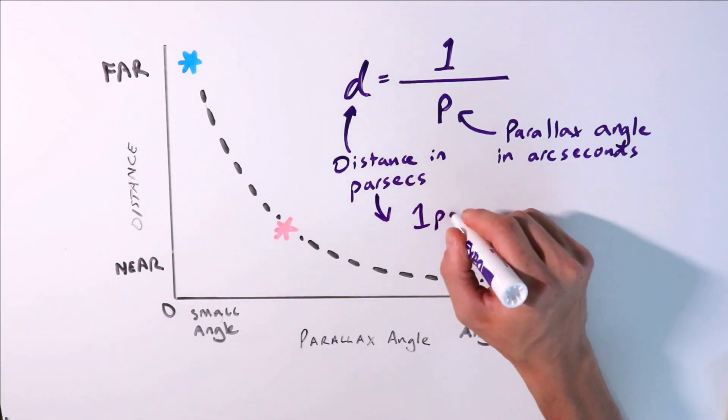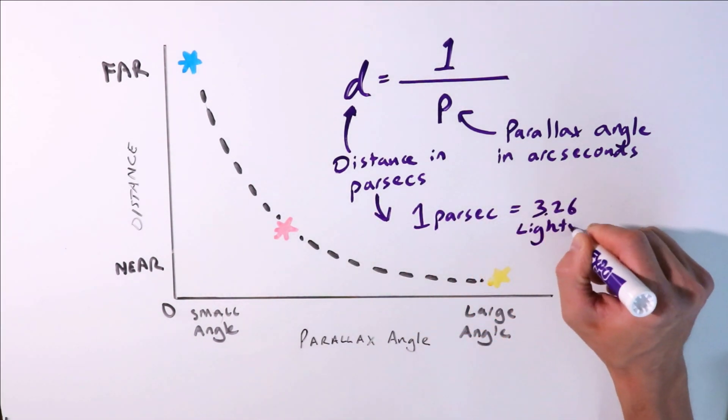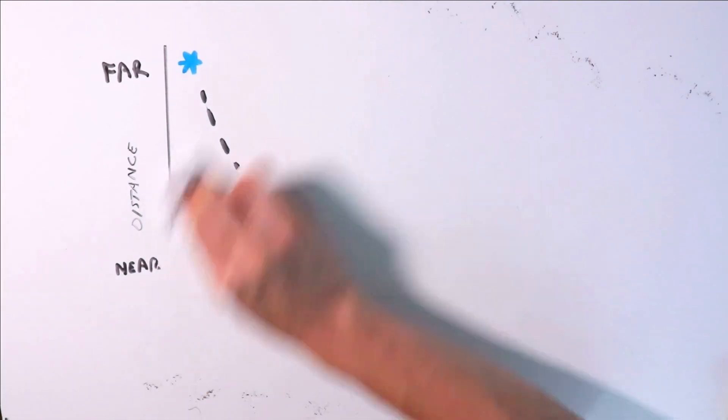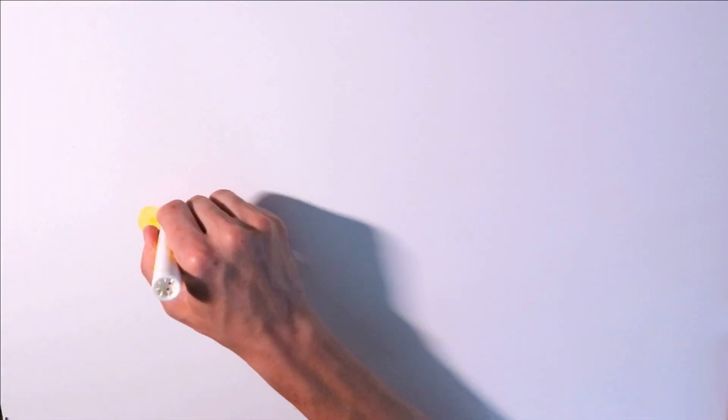A parsec is about 3.26 light-years. Parsecs and arcseconds are used in stellar parallax because they help avoid having to do trigonometry and dealing with clunky units such as miles and degrees. Let's do a worked example of how to use the parallax formula.